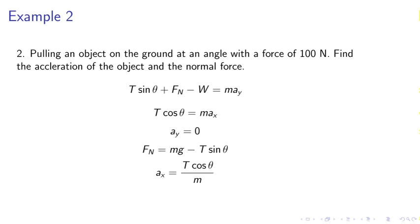Example 2. Pulling an object on the ground at an angle with a force of 100 Newtons. Find the acceleration of the object and the normal force. T sin theta plus Fn minus W equals m a y. In the x direction, T cos theta equals m a x. A y equals zero since it is not moving vertically. Therefore, we solve for the acceleration, A x.